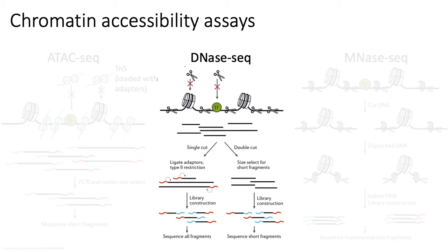DNase-seq was one of the first major chromatin accessibility assays to be used, and there's a lot of data out there — in particular generated by the ENCODE consortium using DNase1 hypersensitivity. But it's recently fallen out of favor for ATAC-seq, mainly because it's highly challenging to work with in practice, and ATAC-seq is just a much easier protocol.